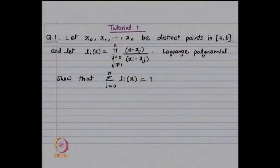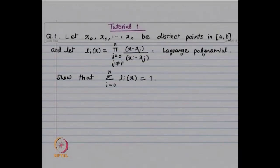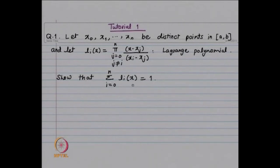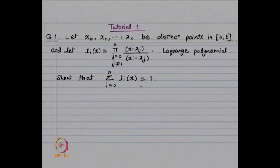Look at the problem: in the interval [a, b], we have n+1 distinct points. Look at the Lagrange polynomial based on these n+1 points. The Lagrange polynomial has the property that l_i(x_j) = 1 if i = j, and 0 if i ≠ j. We want to show that the summation of l_i(x) for i from 0 to n is equal to 1.